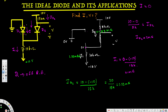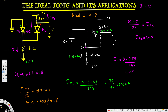Now we find voltage V. Since the current is flowing downward through the 5k resistor, we write: 10 minus V divided by 5k = 1.33 milliamps. Solving: 10 minus V = 1.33m times 5k = 6.65, so V = 10 minus 6.65 = 3.35 volts. That's the voltage V. That's how we solve this kind of problem — I hope this helps, thanks for watching.